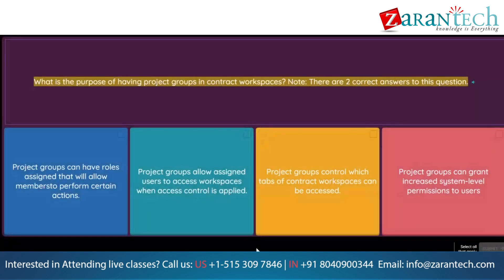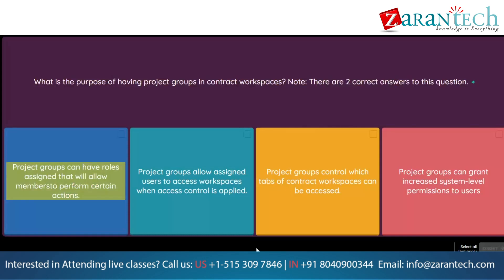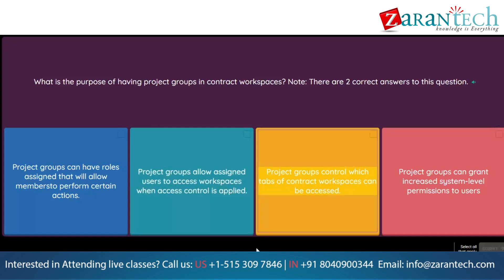Question: What is the purpose of having project groups in contract workspaces? Note: there are two correct answers. Option 1: Project groups can have roles assigned that will allow members to perform certain actions. Option 2: Project groups allow assigned users to access workspaces when access control is applied. Option 3: Project groups control which tabs of contract workspaces can be accessed. Option 4: Project groups can grant increased system-level permissions to users.